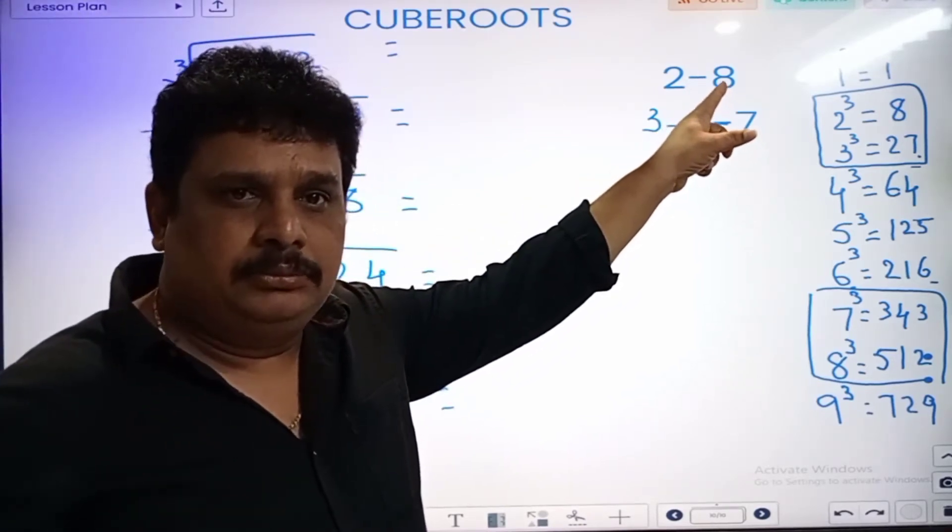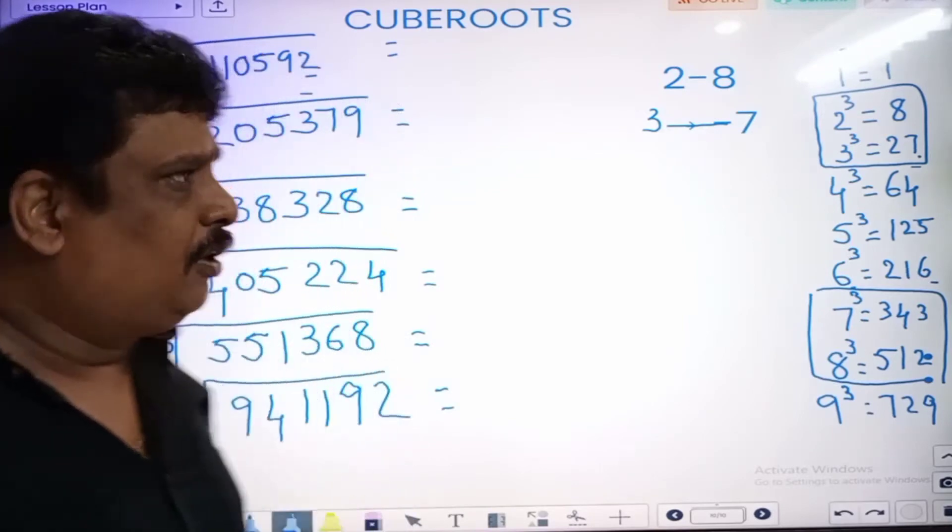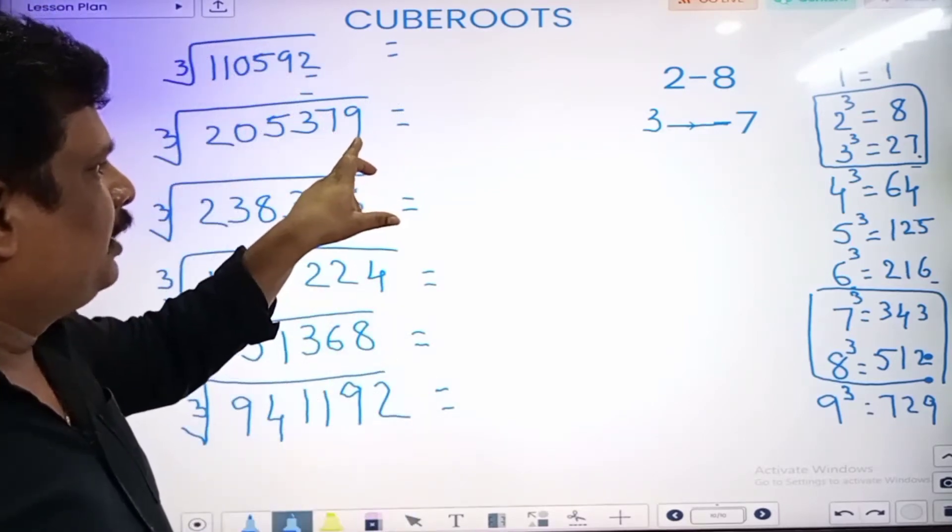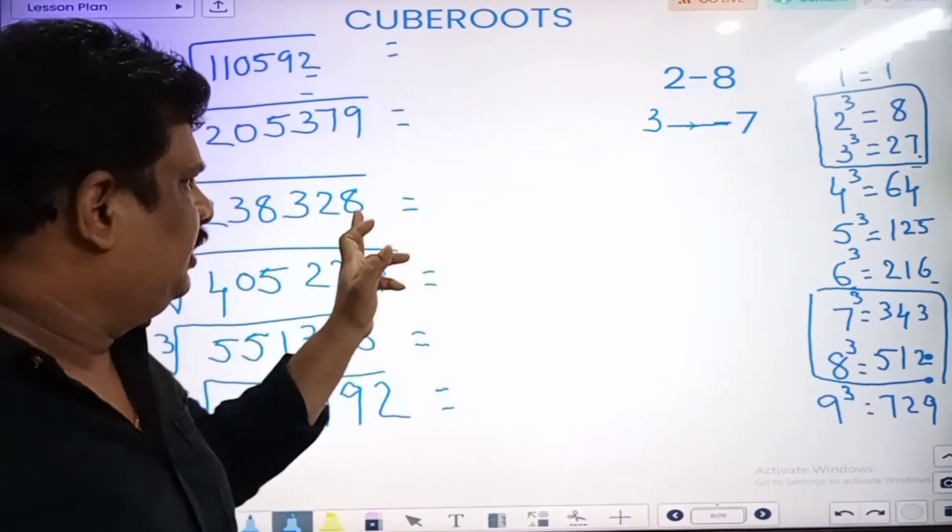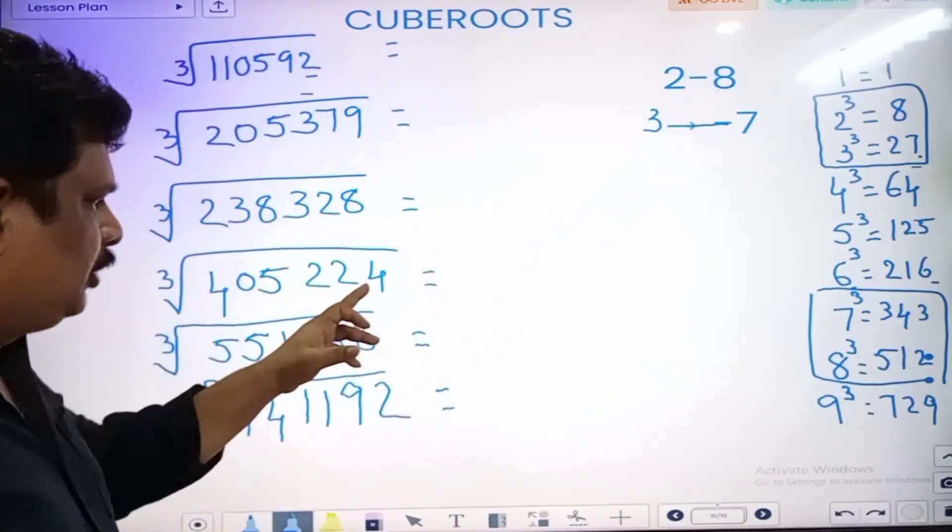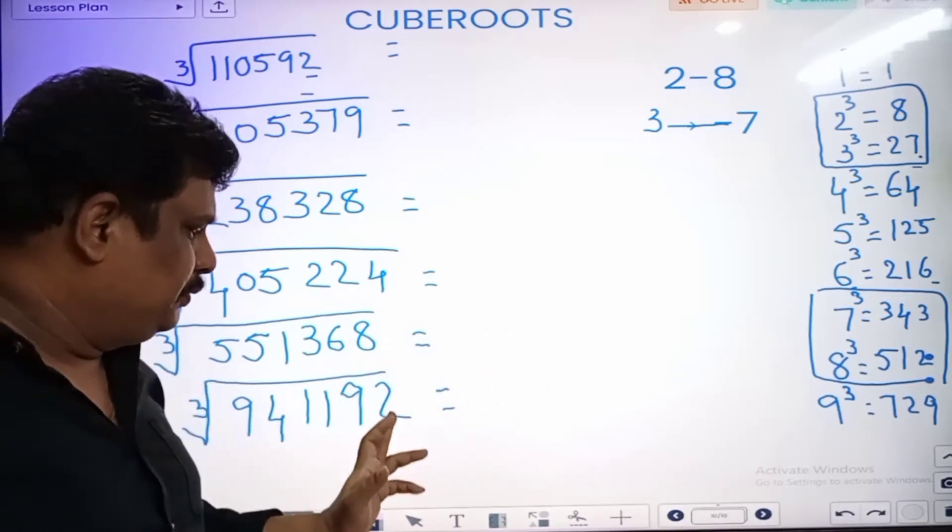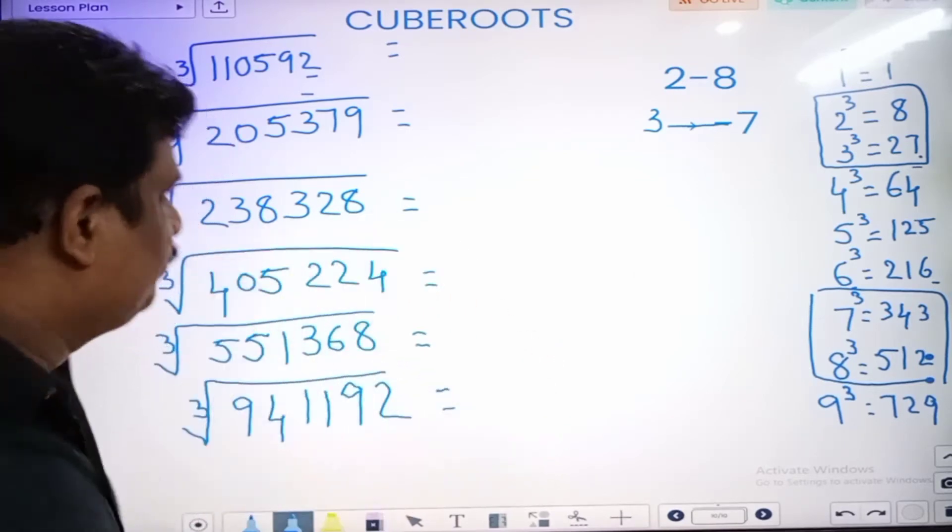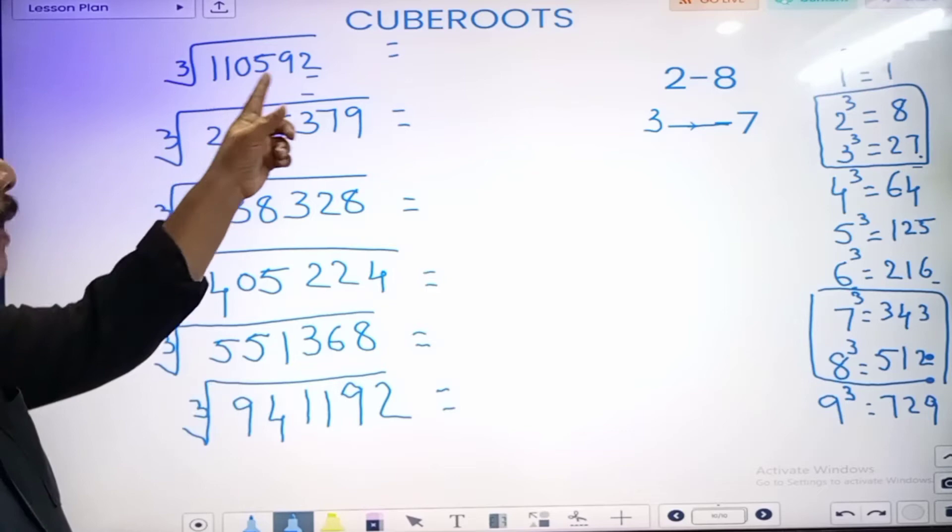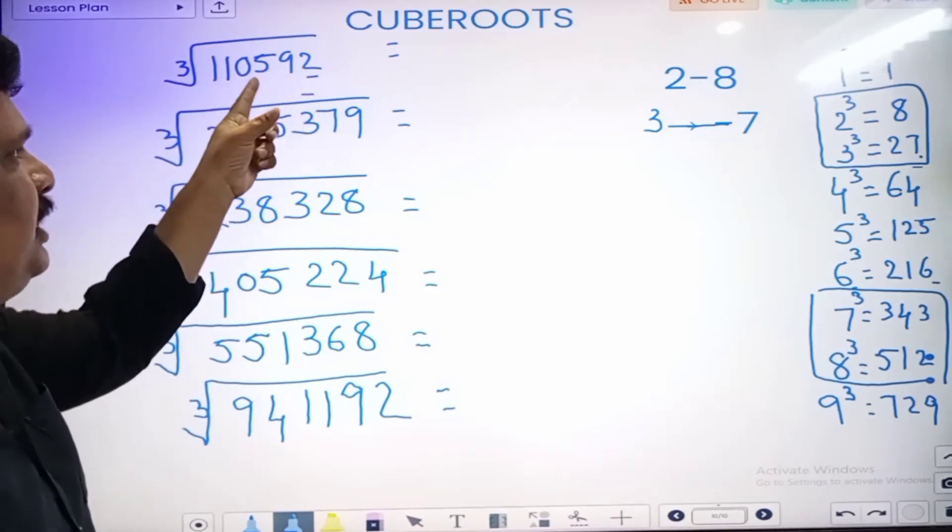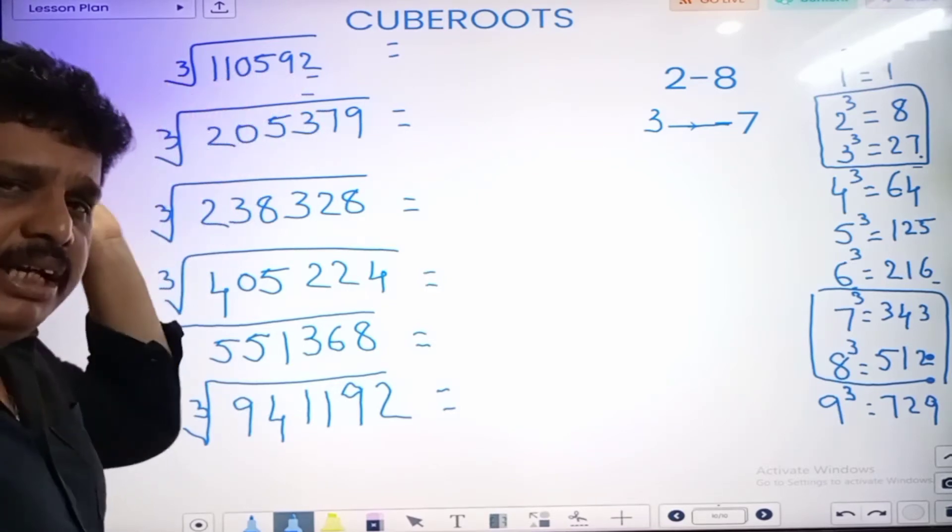8 is 8, 9 is 9, 8 was 2. Last digit 4, 4 was 48. 8 was 2, 2 was 8. So the first 2 is the number of digits: 3 digits, 4 digits, 5 digits, 6, 7, 8, 9, 10.